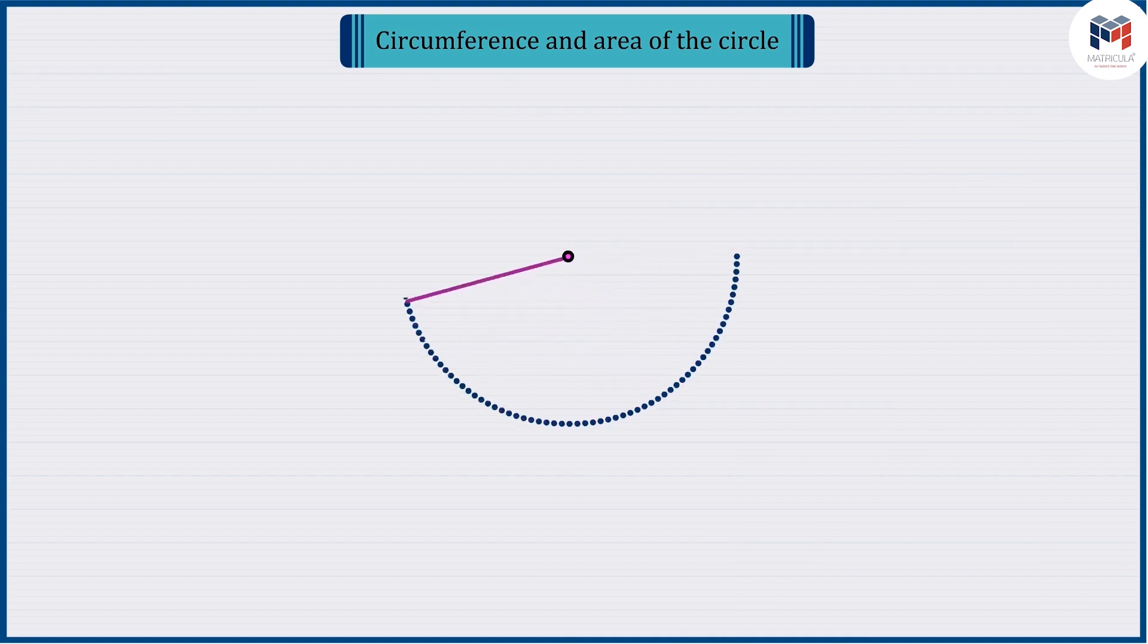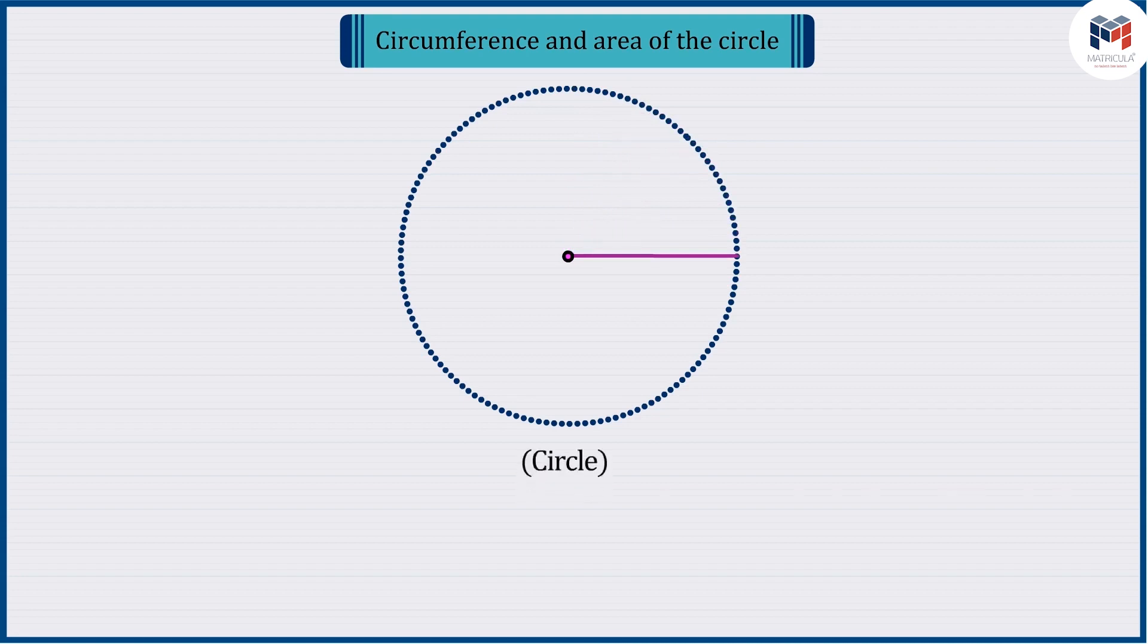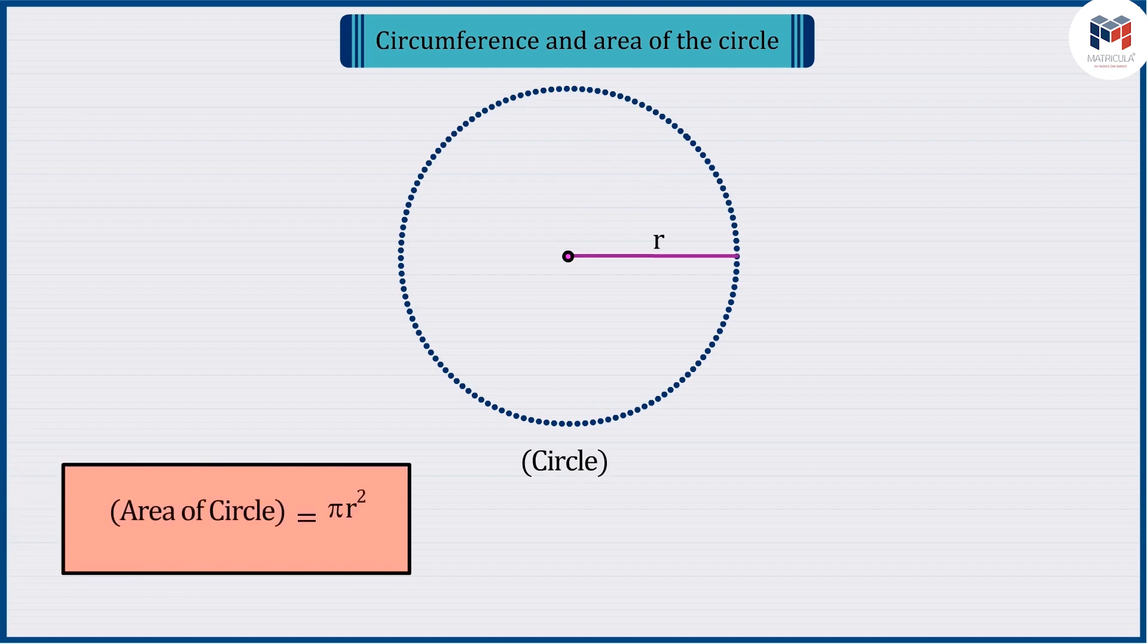As you all know, the group of all the points on a plane which are at a constant distance from a fixed point on the plane is called a circle, whose area is pi r raised to the power 2.